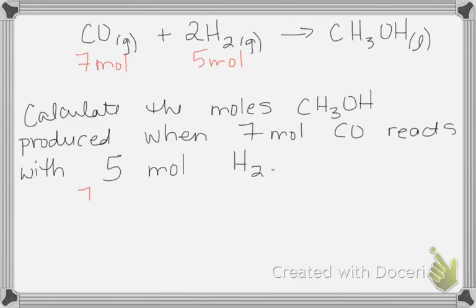So, what does that mean I'm going to do here? It means I'm going to take the seven moles of the carbon monoxide and I'm going to use that number to calculate how many moles of methanol will that make. And then I'm going to start with five moles of hydrogen and I'm going to use that number to calculate how many moles of methanol will that make. And then I'm going to compare those two answers. Does that make sense?